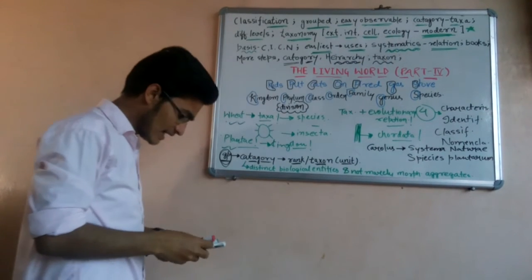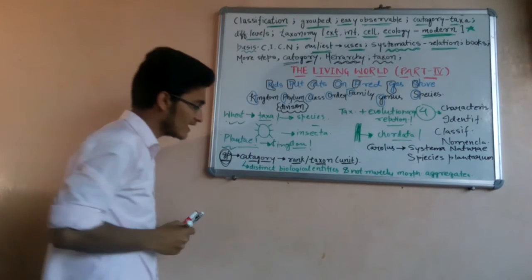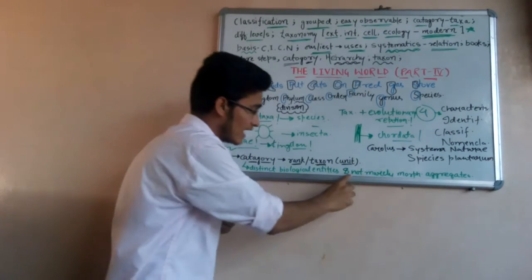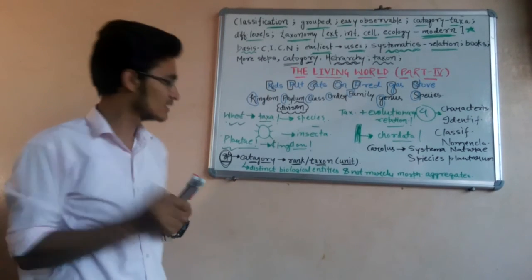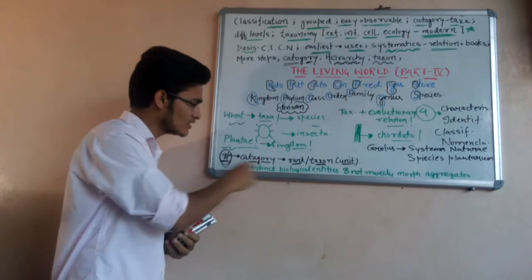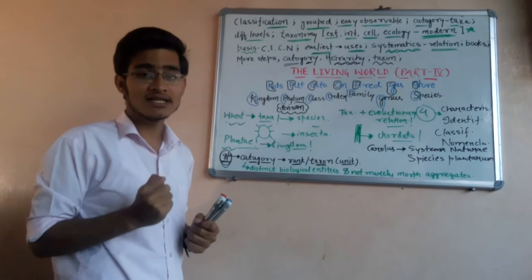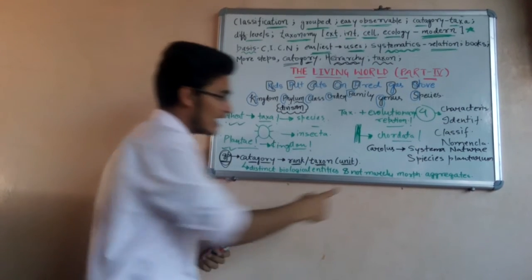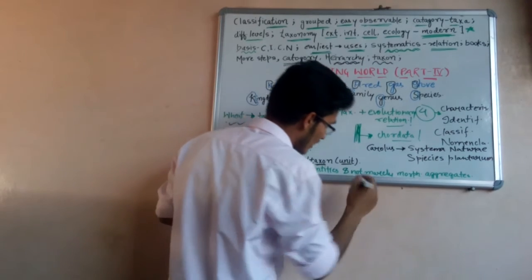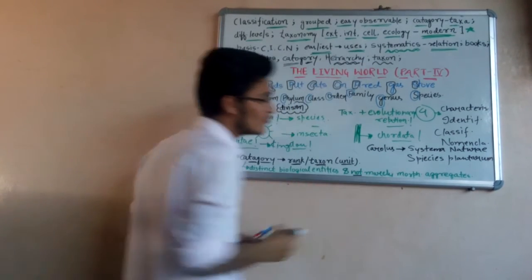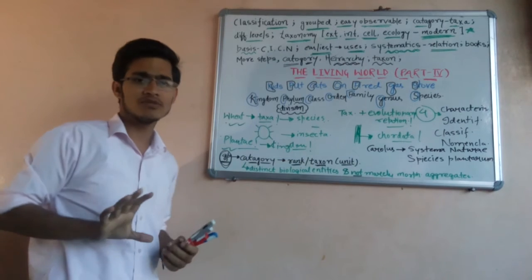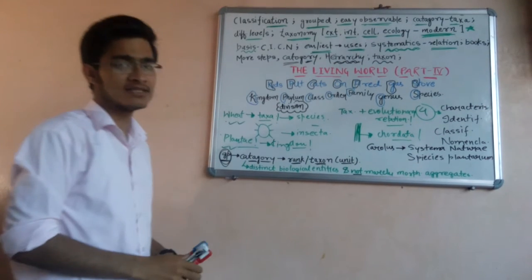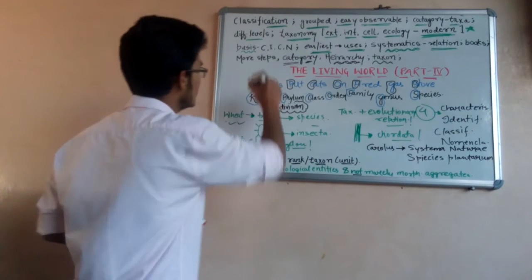In NCERT it has mentioned a very important line: the category is the distinct biological entity and not merely the morphological aggregate. The categories about which we are talking are biological entities which are distinct—one category is distinct from another category—and not simply morphological aggregates, but are distinct biological entities in themselves.